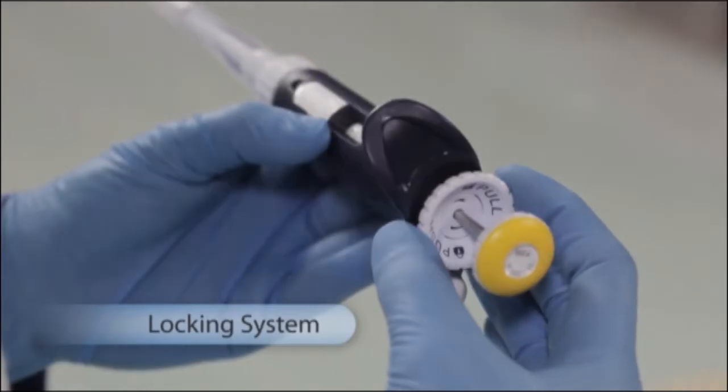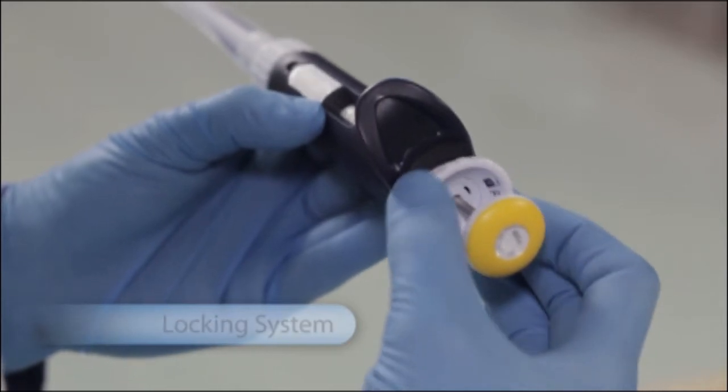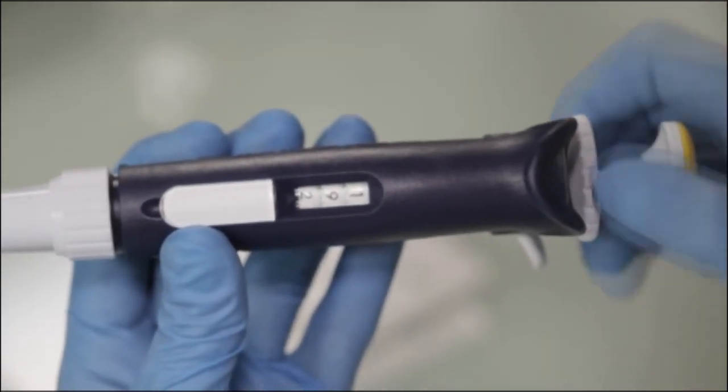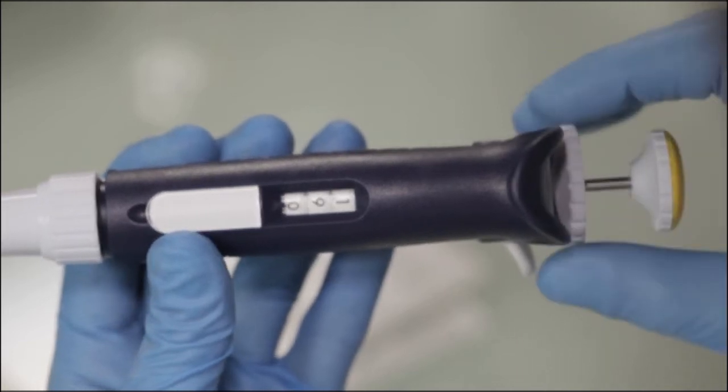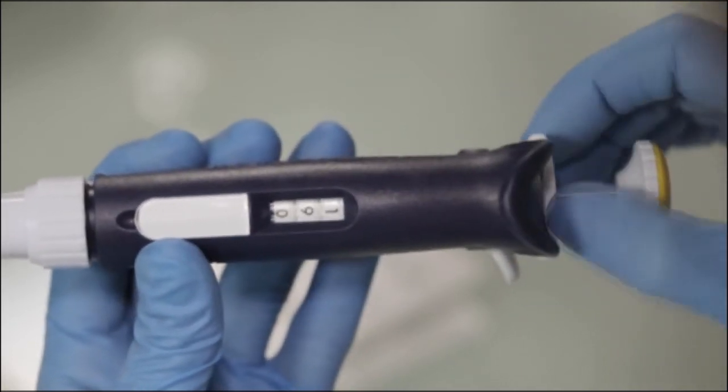A lockable volume system guarantees secure pipetting. It is easy. Just push the thumb wheel up, rotate it to change the volume, and push the thumb wheel down to lock it.